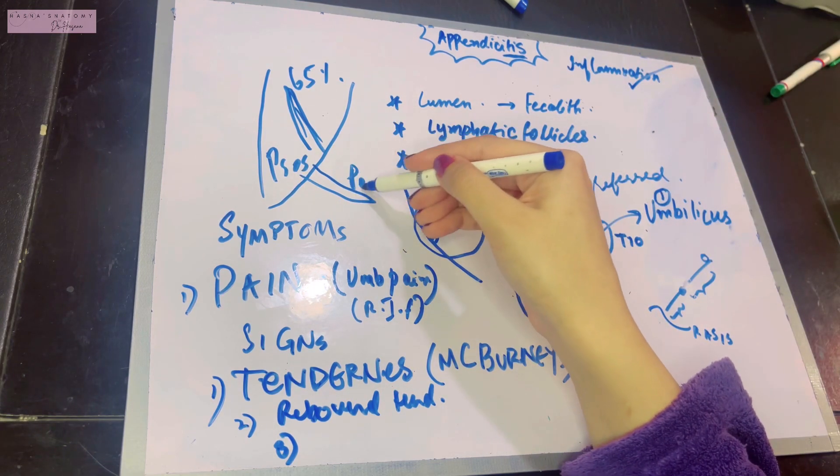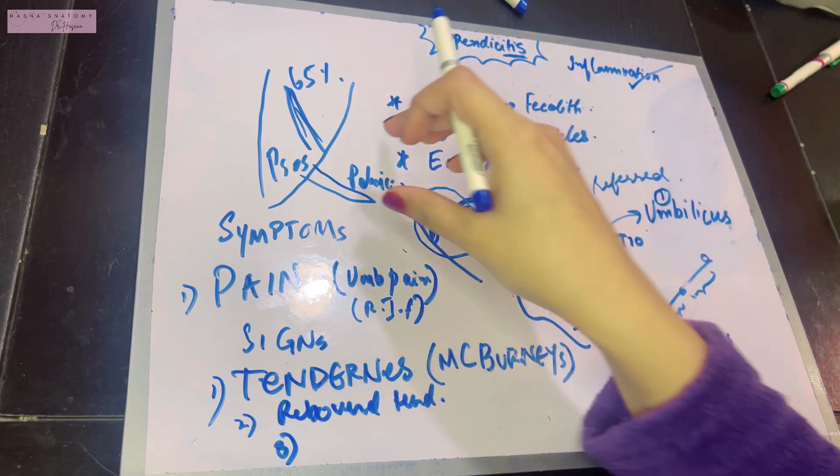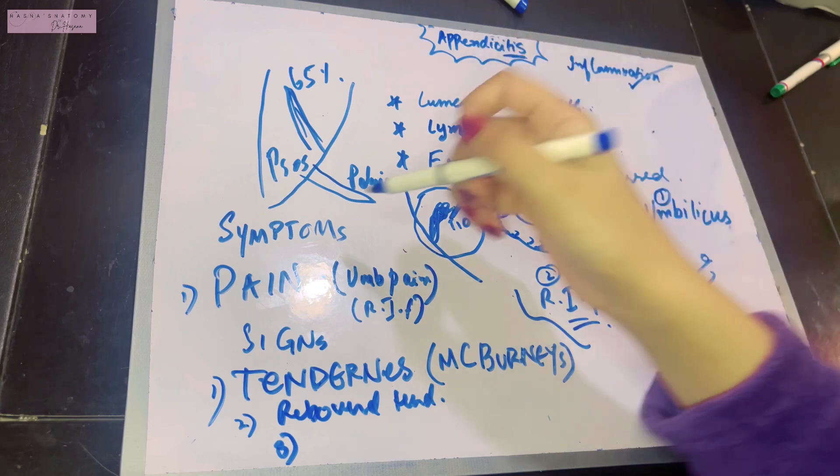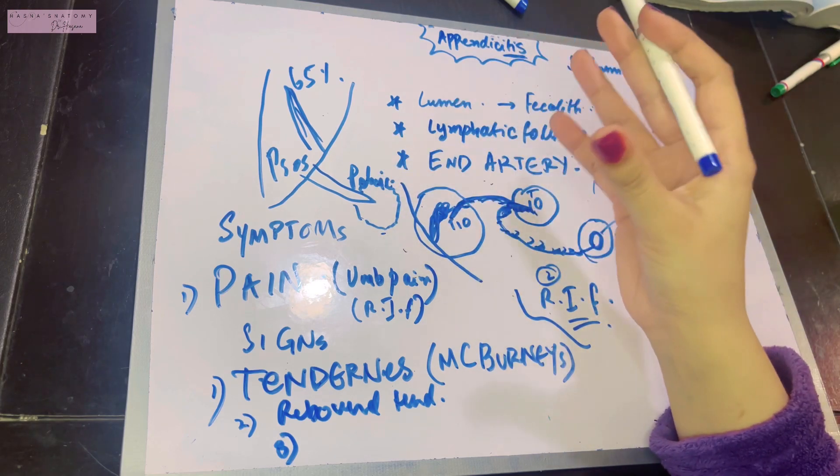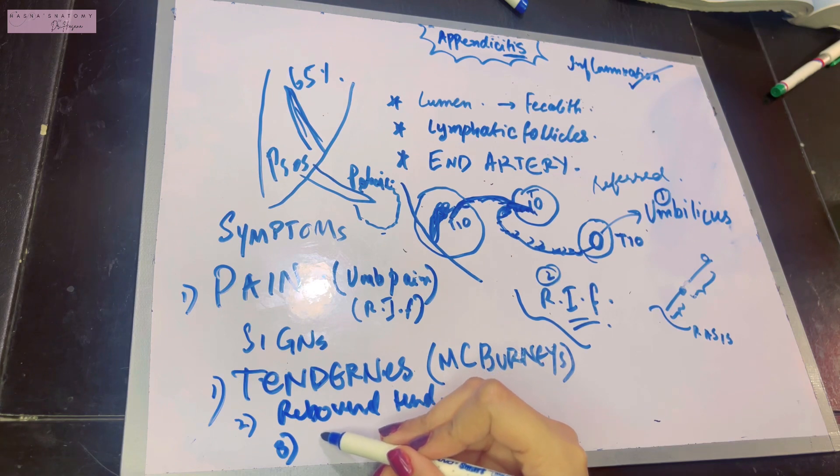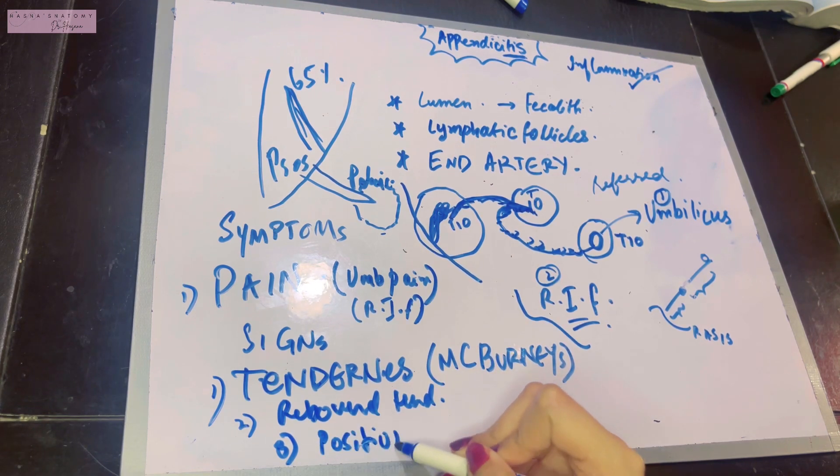If you flex the thigh of the patient and medially rotate it, the obturator internus is stretched and causes pain to the patient. These are the two position-related signs that you will see in a patient, and you can detect where the appendix might be lying.